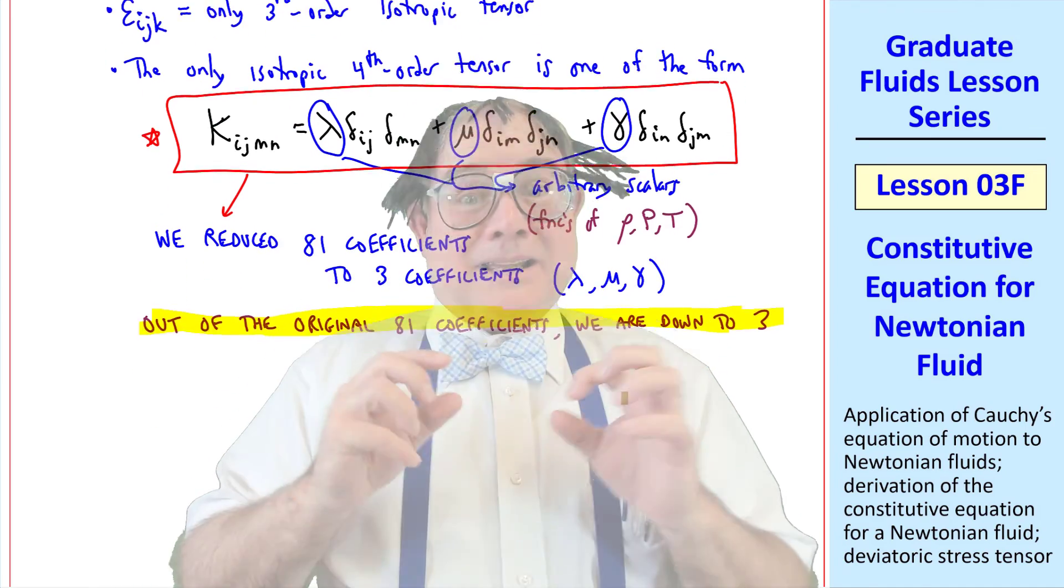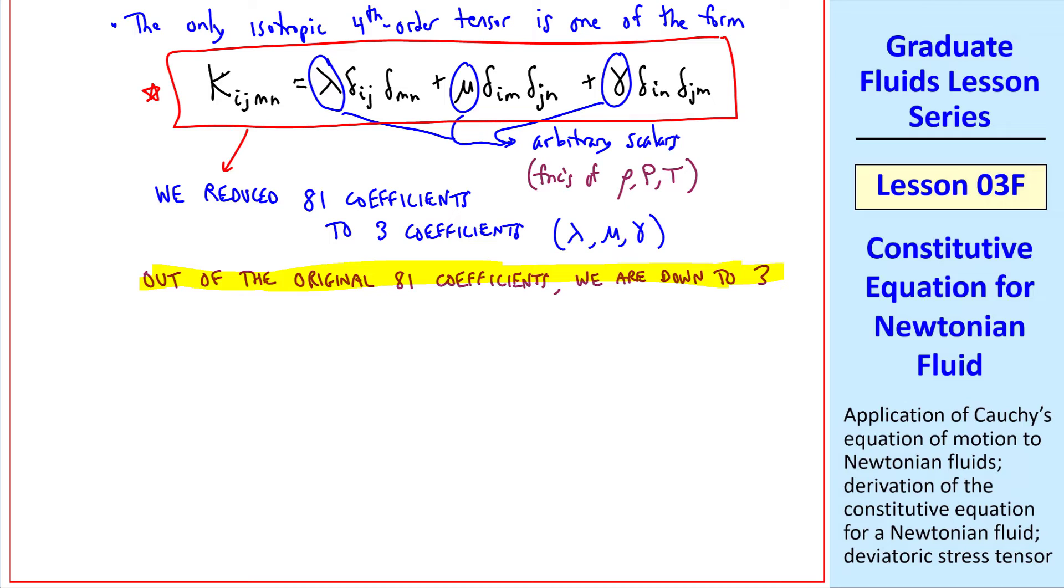One more argument that's not really part of Stokes' assumptions, but we've mentioned before, that tij is symmetric. Therefore, tauij, the deviatoric part, must also be symmetric.